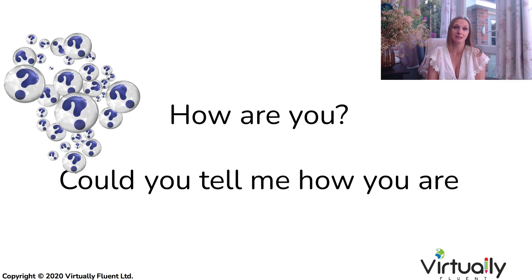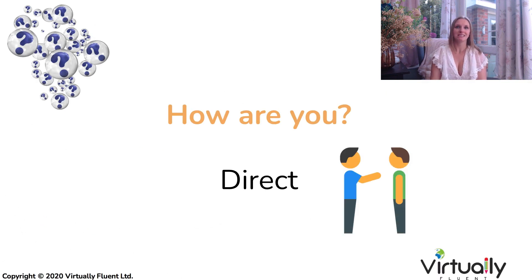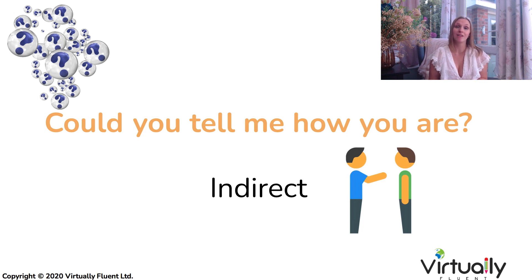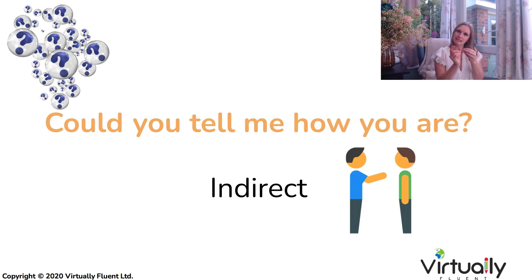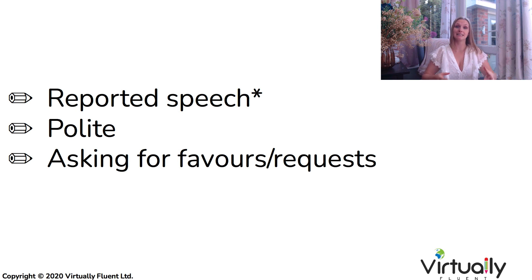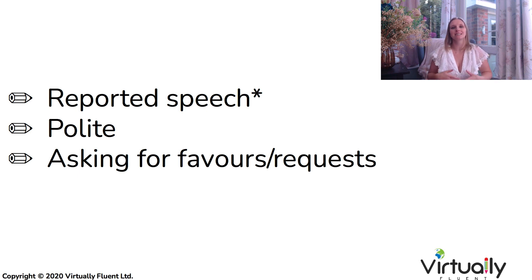We're going to look at these two examples: 'How are you?' and 'Could you tell me how you are?' The first question is what we call a direct question because I'm speaking directly to you. The second question is what we call indirect — I'm still asking you for information but I am inserting this little question into a larger phrase. We use this larger phrase to be a lot more polite, to ask for favours and requests, and generally to speak with a higher, more formal level of language.